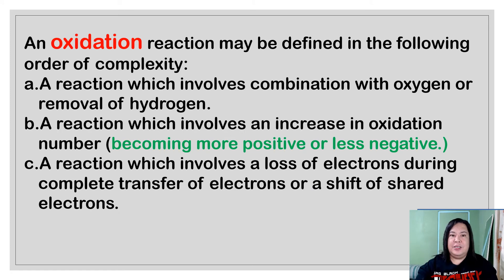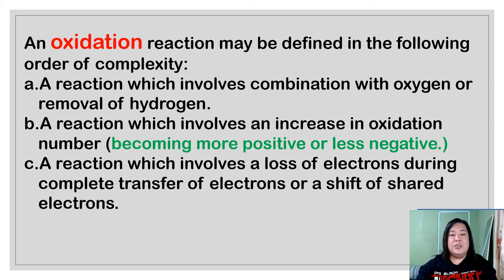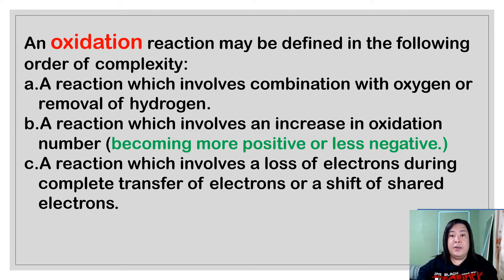What is oxidation? An oxidation reaction may be defined in the following order of complexity. Number one, a reaction which involves the combination with oxygen or the removal of hydrogen. Second, a reaction which involves an increase in oxidation number, becoming more positive or less negative. And number three, a reaction which involves the loss of electrons during the complete transfer of electron or a shift of shared electron.